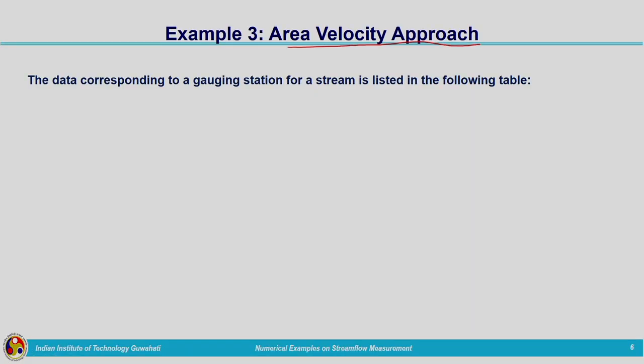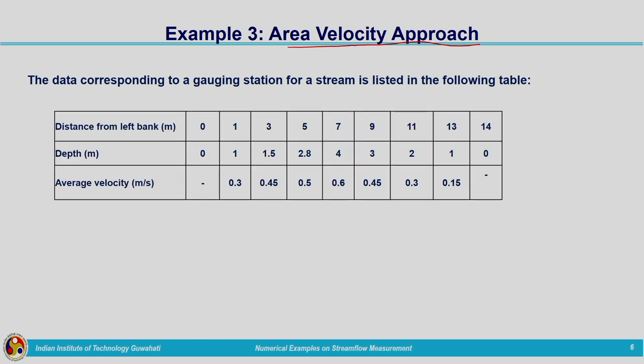The question: the data corresponding to a gauging station for a stream is listed in a table. The data given are distance from the left bank, depth of water, and average velocity. Here, average velocity is already given — unlike the previous question where velocities at two different depths were given and we had to compute the average velocity. So average velocity computation is not required here.